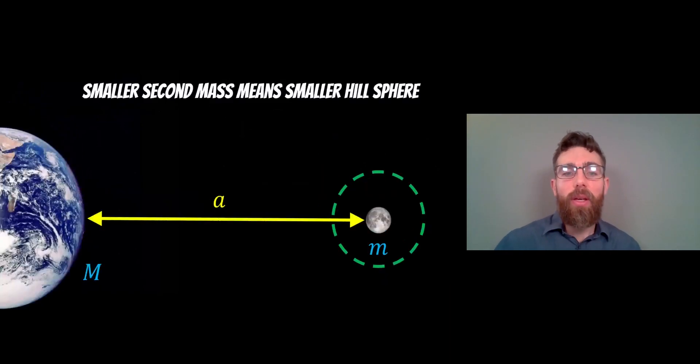Okay, so if the second mass, in this case the Moon, was smaller, then the hill sphere would be smaller because the gravitational attraction of the Earth would be greater. So actually the Moon wouldn't have that much of an influence on smaller objects. So if it's smaller, the hill sphere is smaller.